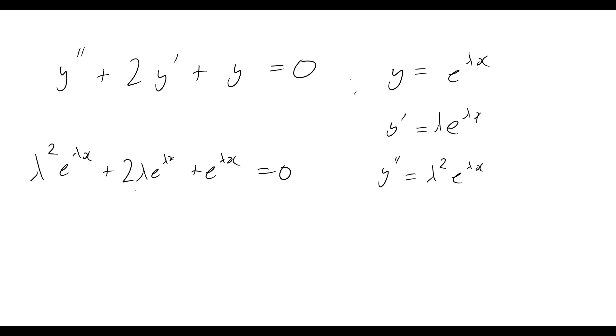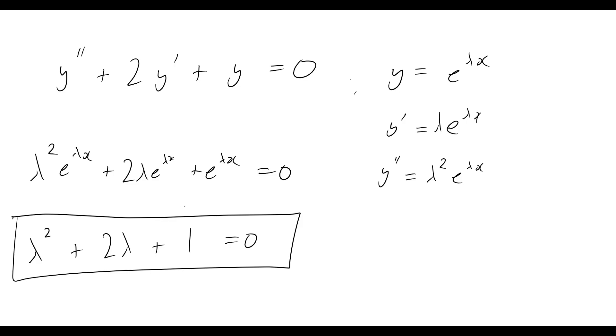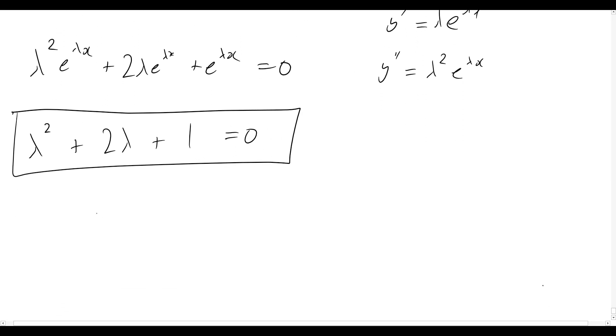Okay, so now we just quickly divide everything by e to the lambda x and we're left therefore with lambda squared plus 2 lambda plus 1 equals 0. And that's just our characteristic equation, similar to what we've seen earlier.